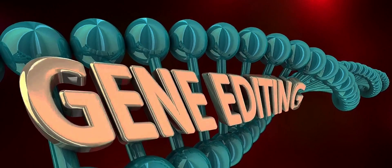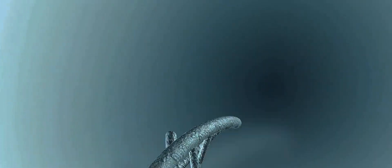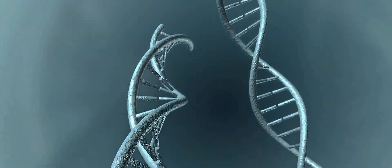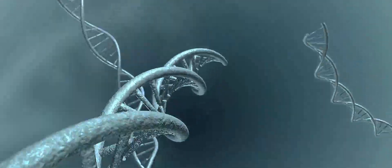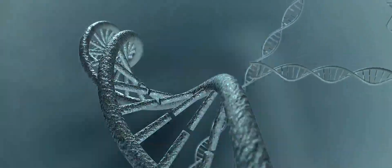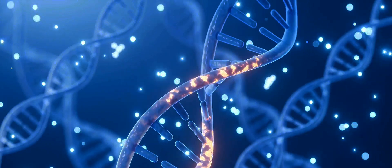By manipulating their DNA, we could potentially express dormant traits that mirror those of their prehistoric predecessors. Imagine a chicken, but with the teeth and tail of a velociraptor. It's a startling thought, isn't it?